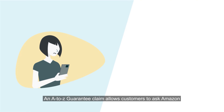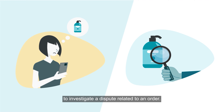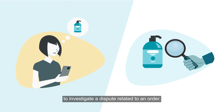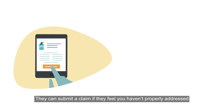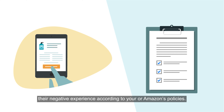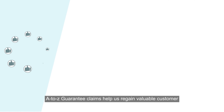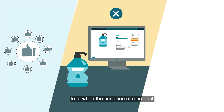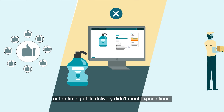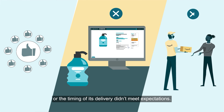An A-to-Z guarantee claim allows customers to ask Amazon to investigate a dispute related to an order. They can submit a claim if they feel you haven't properly addressed their negative experience according to your or Amazon's policies. A-to-Z guarantee claims help us regain valuable customer trust when the condition of a product or the timing of its delivery didn't meet expectations.